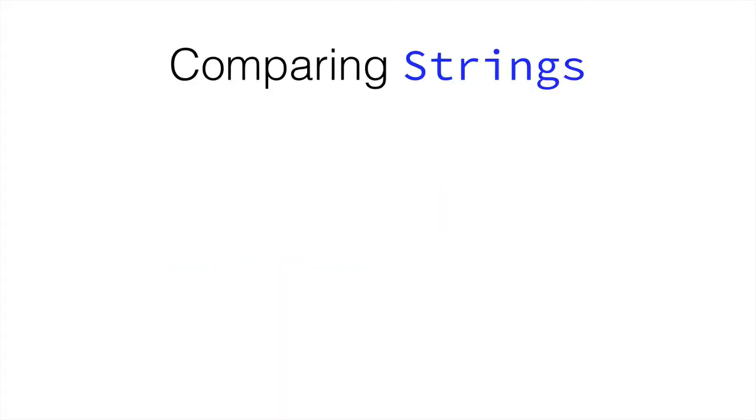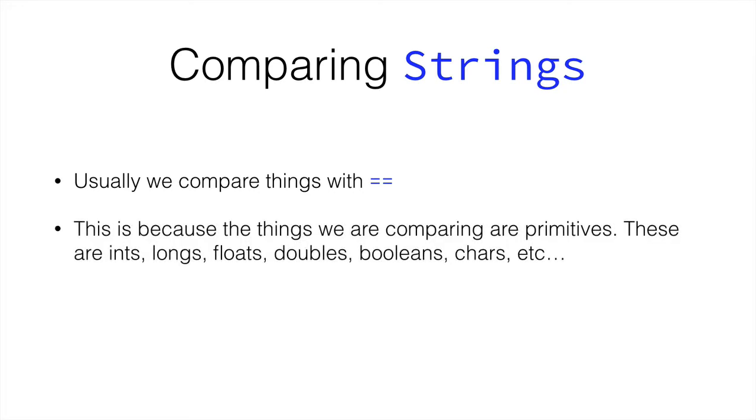We can also compare strings. As I've said, we usually compare them with two equal signs. And what is going to come now is an explanation of why we compare some things with equal signs, and why we compare some things without equal signs. And this is because when we compare things with equals equals, we are comparing primitives.